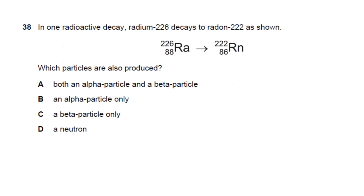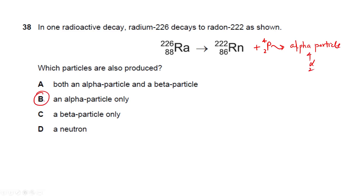Question 38: radium-226 decays to radon-222. The mass number decreases by 4 and the atomic number by 2. This corresponds to the emission of an alpha particle (helium-4 nucleus: 2 protons and 2 neutrons). Answer: alpha particle.